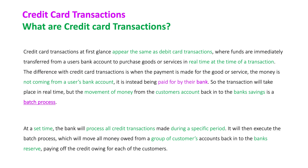But the movement of money from the customer's account back into the bank's savings is a batch process. At a set time, the bank will process all credit transactions that have taken place during a specific period, executing a batch process that moves all the money owed from a group of customers' accounts back into the bank's reserve, paying off the credit debt of all these customers.